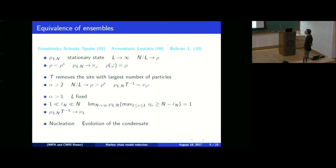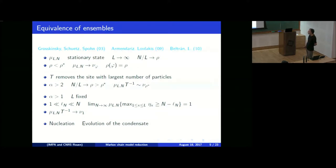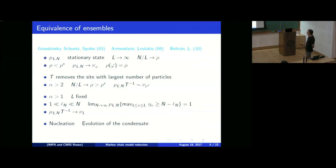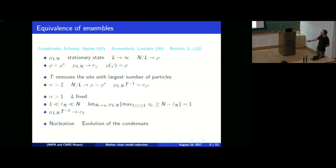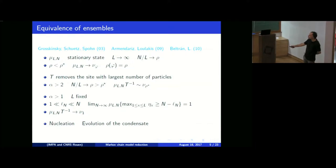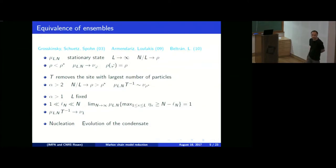I will fix alpha strictly bigger than one, and the total number of sites L is fixed for the rest of the talk while I send the total number of particles N to infinity. What we can prove is that there exists a site with more than N minus LN particles with probability asymptotically equal to one. That is, for any sequence converging to infinity but smaller than N, there is one site with at least N minus LN particles with probability almost one.